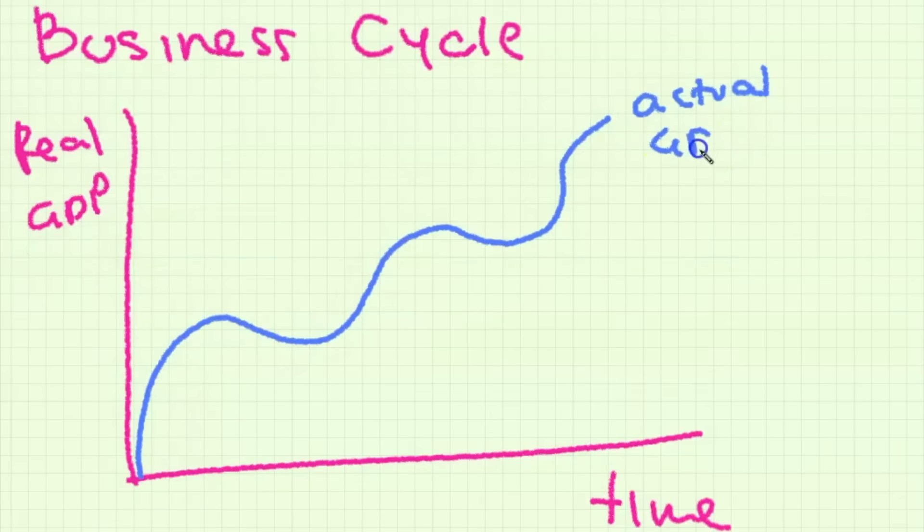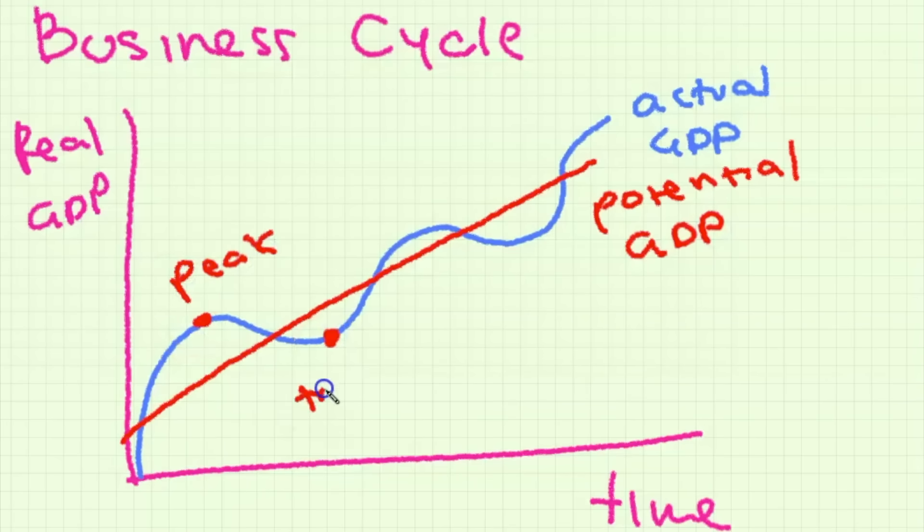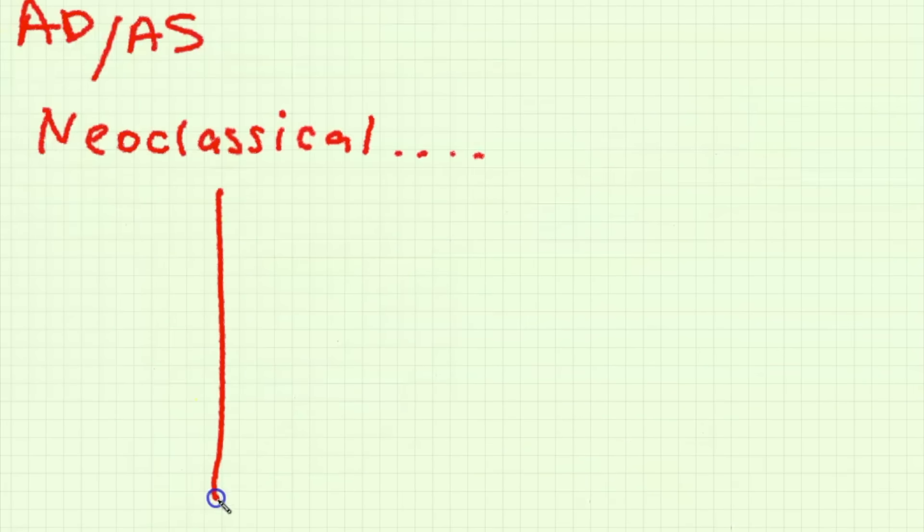The business cycle is meant to show that over time we see fluctuations, short-term fluctuations in actual GDP but overall long-term growth trends. It's supposed to show the downturns and upturns in economic activity.